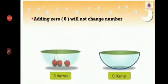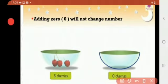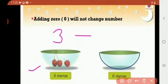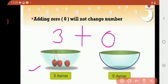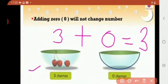The next fact is: adding zero will not change a number. As you can see, there are two bowls. In the first bowl there are three cherries, and in the other bowl there is no cherry — that means zero. So three plus zero equals three. Always remember: adding zero to any number gives you the number itself.